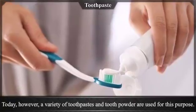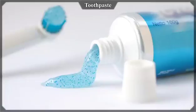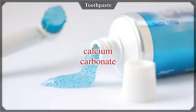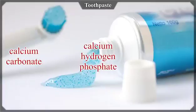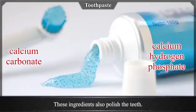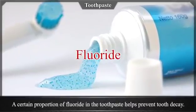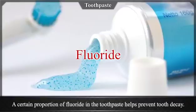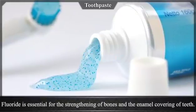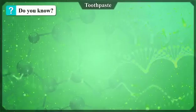Today, a variety of toothpastes and tooth powders are used for this purpose. The principal ingredients of a toothpaste — calcium carbonate and calcium hydrogen phosphate — remove the dirt on teeth and also polish them. A certain proportion of fluoride in the toothpaste helps prevent tooth decay. Fluoride is essential for the strengthening of bones and the enamel covering of teeth.